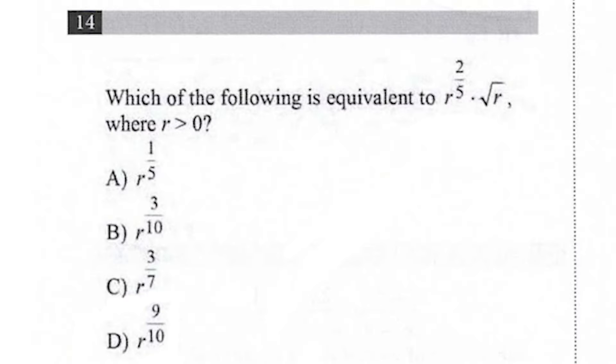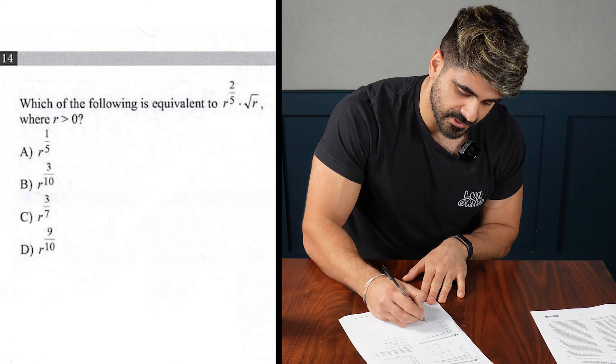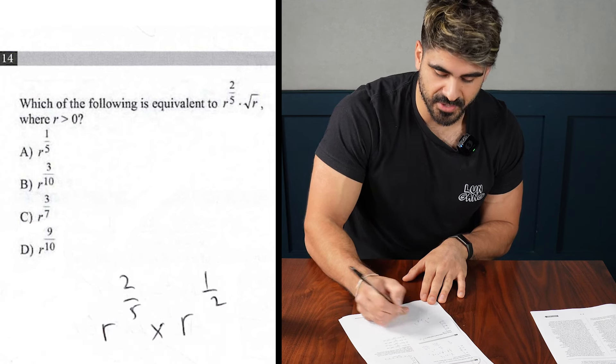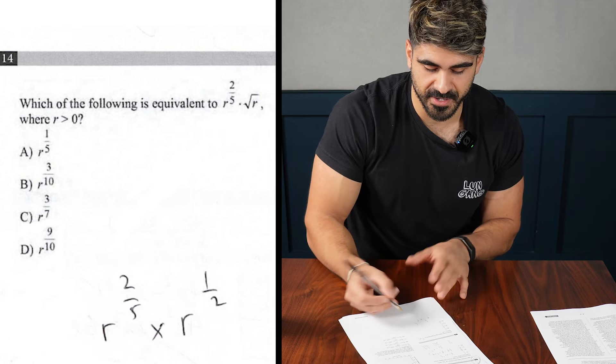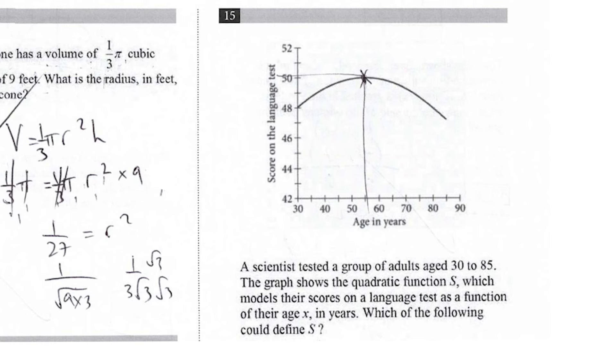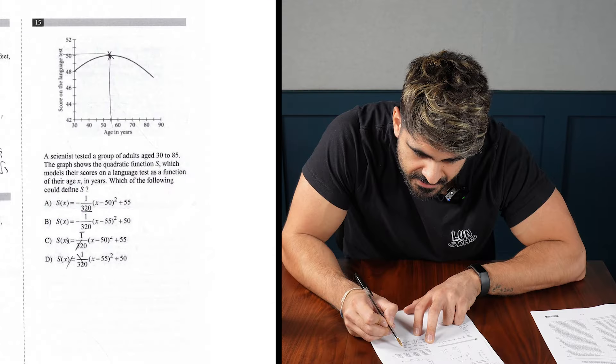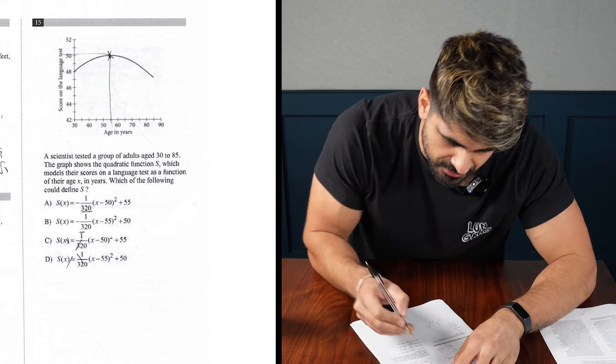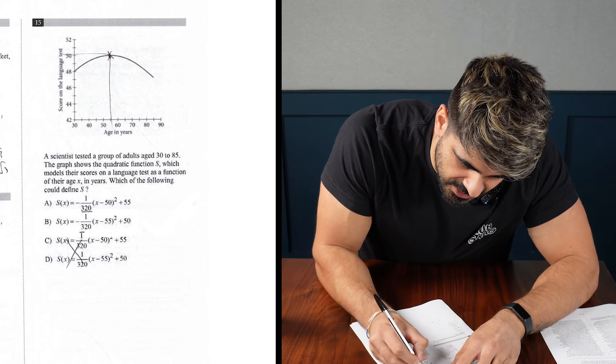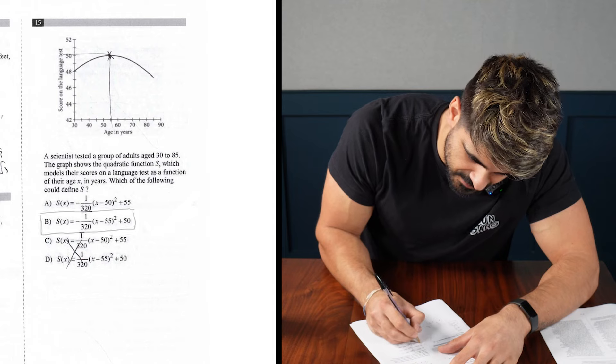Which of the following is equivalent to r to the power of 2 fifths? Oh, dot. This notation is so different, man. Okay. So they're saying times r to the power of a half. So you're going to add them, right? So 4 plus 5, 9 tenths. This thing's annoying me. Which of the following could define s? 55. So it's to do with the maximum point, right? So it can't be 55. The maximum point here goes up to 50. So it's going to have to be B.